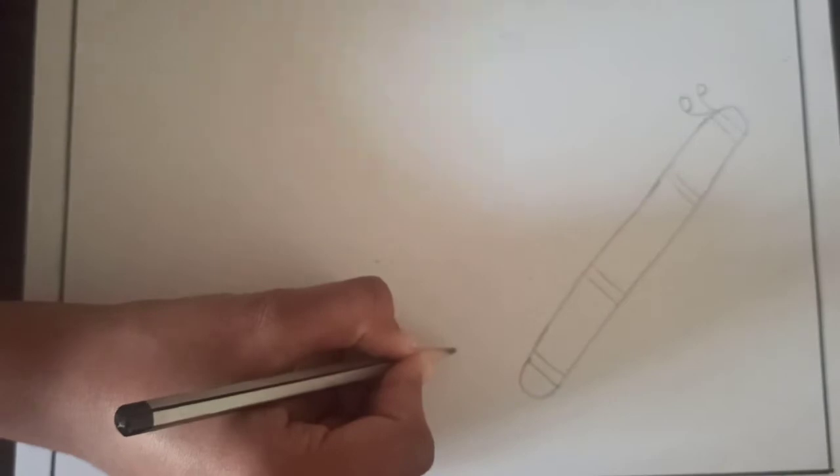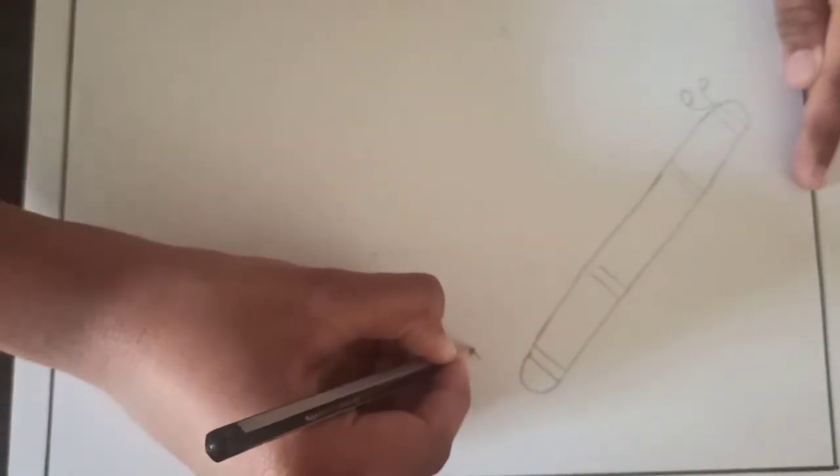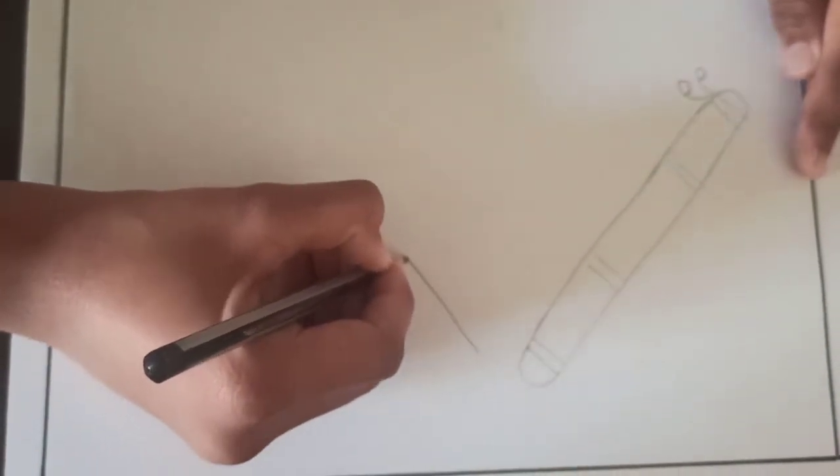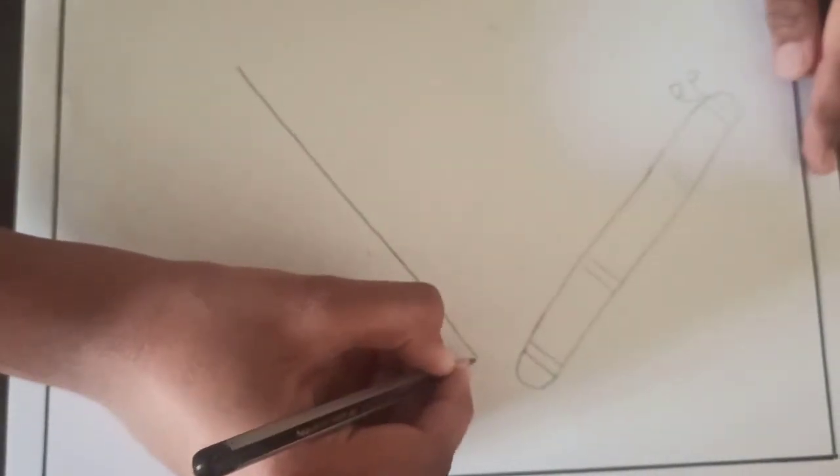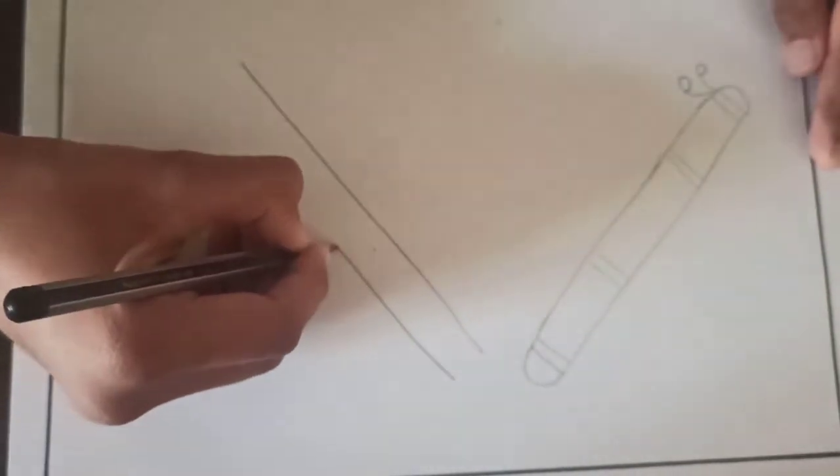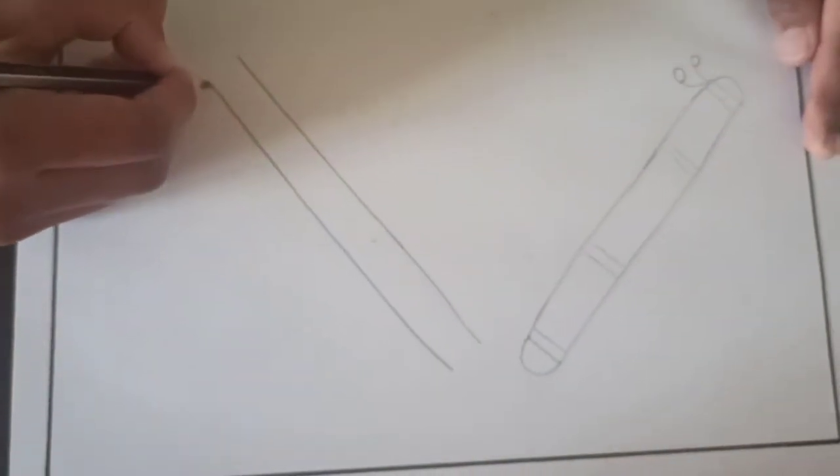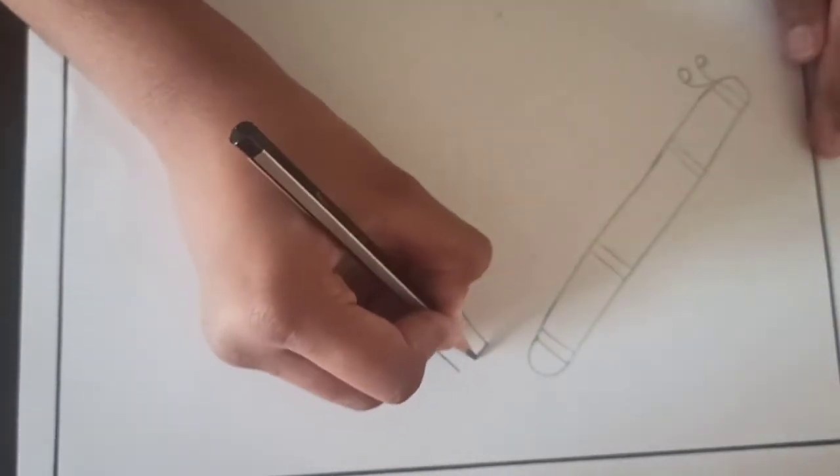Now our one dandiya is ready but we can't play with one dandiya. So let's draw one more dandiya. So one more dandiya stick like this from another side. See one slant line. Take some distance and draw one more slant line and then join the two slant lines this way.